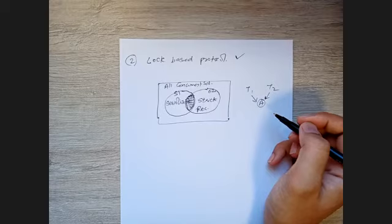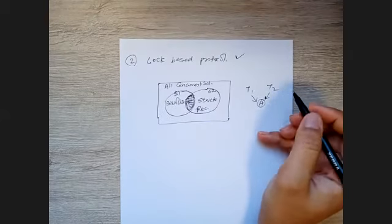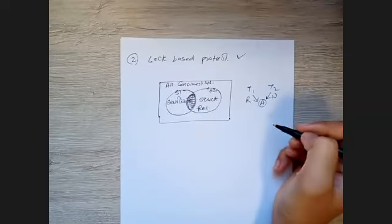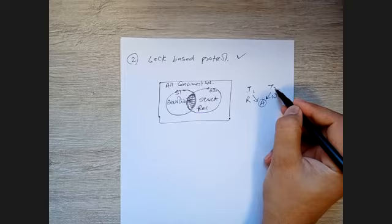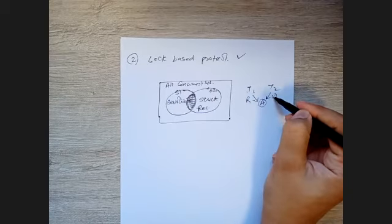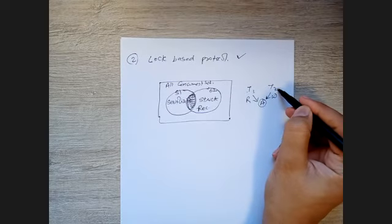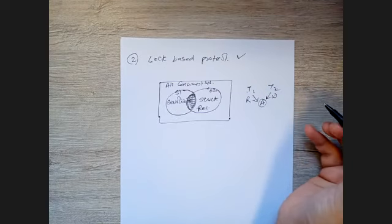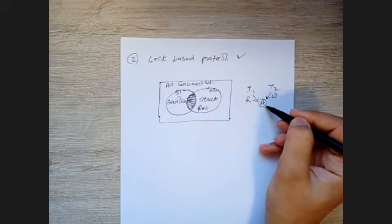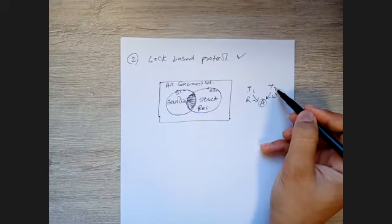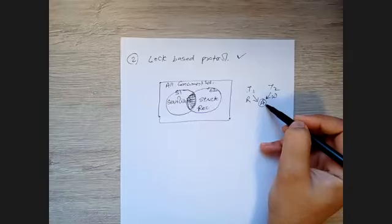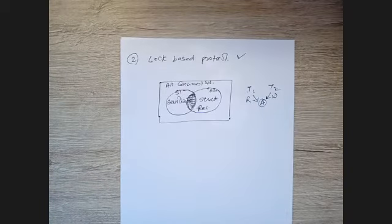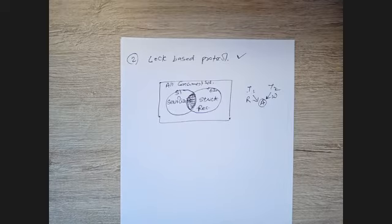The issue is that the time of access must not be the same. If T1 wants to perform a read and T2 wants to perform a write on the same data item, both trying at the same time creates a conflict. In timestamp-based protocol, we delay transactions: whichever transaction enters the system first gets priority to operate on the data item. So if T1 enters before T2, T1 gets priority to execute on that data item.